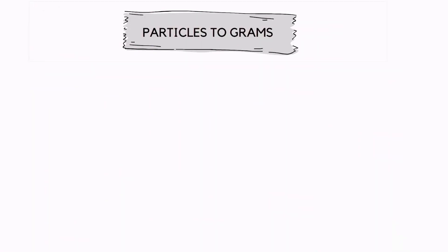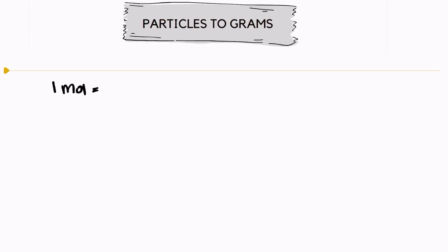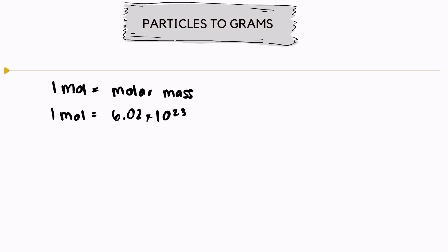Hi, today we're going to take a look at converting between particles and grams. We need two conversion factors to do this: one mole is equal to the molar mass of an element or compound, and one mole is equal to 6.02 times 10 to the 23rd particles. We need both of those unit conversions to convert all the way from particles into grams.